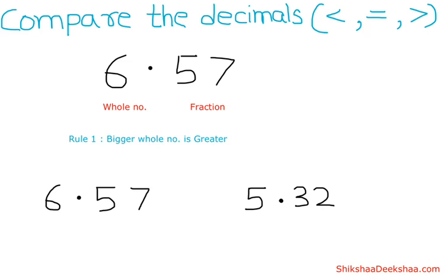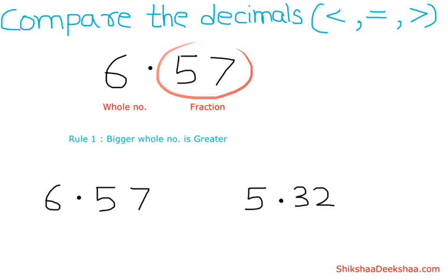Let's take a decimal number 6.57. When we have a decimal number, we always have two parts. The number before the point is a whole number, and the number after the point is known as a fraction. In this fraction,